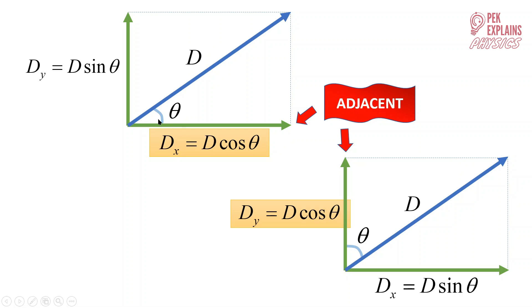In other words: got angle, use D cosine theta; no angle, use D sine theta. We cannot say D cosine theta is fixed at the X component or D sine theta is fixed at the Y component — it depends on where the angle theta is. If theta is with the X component, then X uses D cosine theta. If theta is with the Y component, then Y uses D cosine theta.